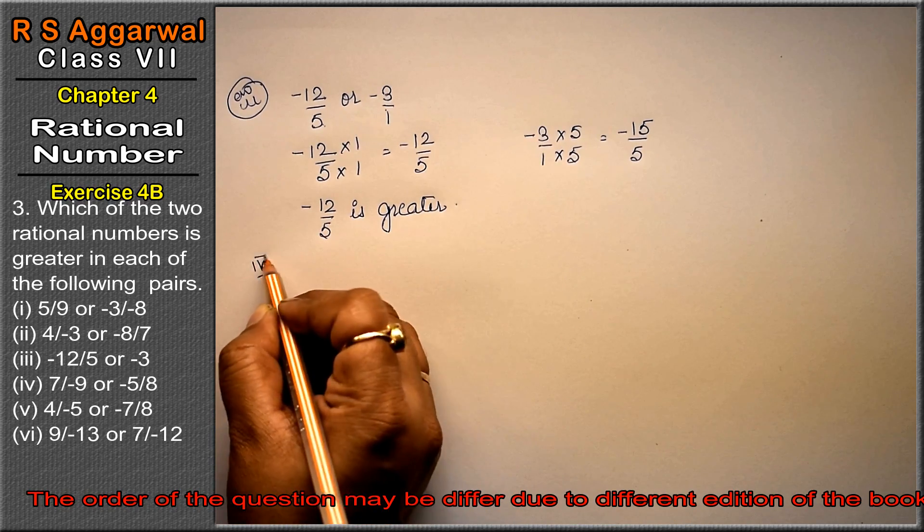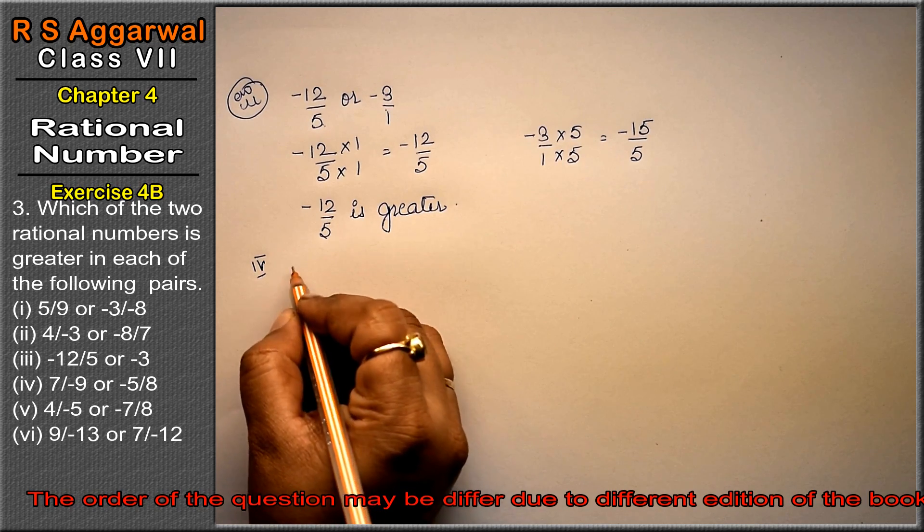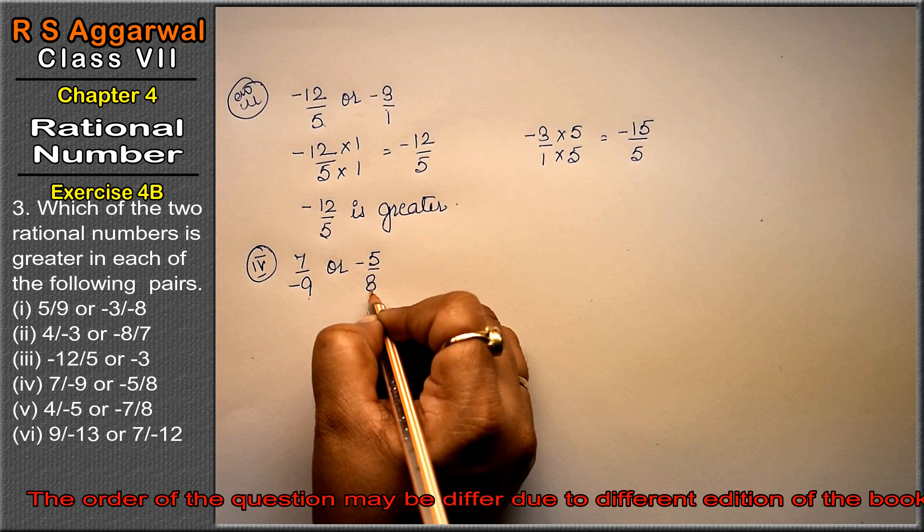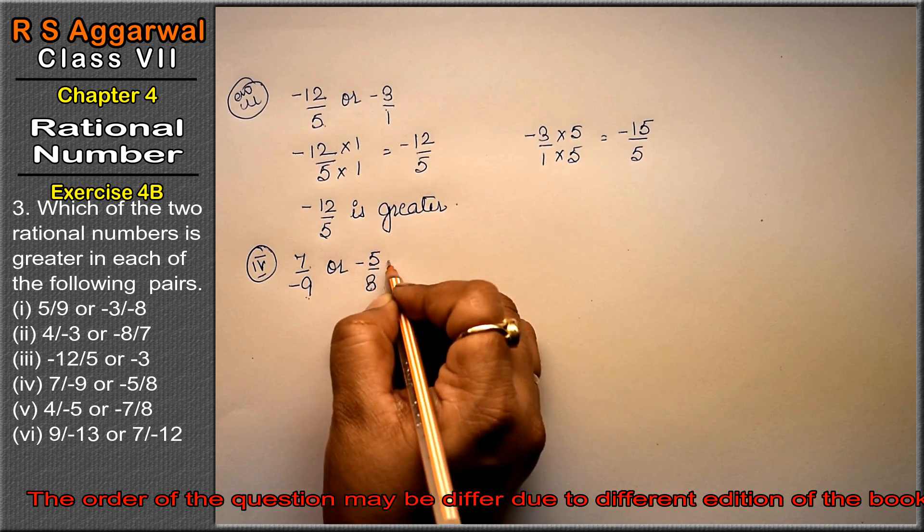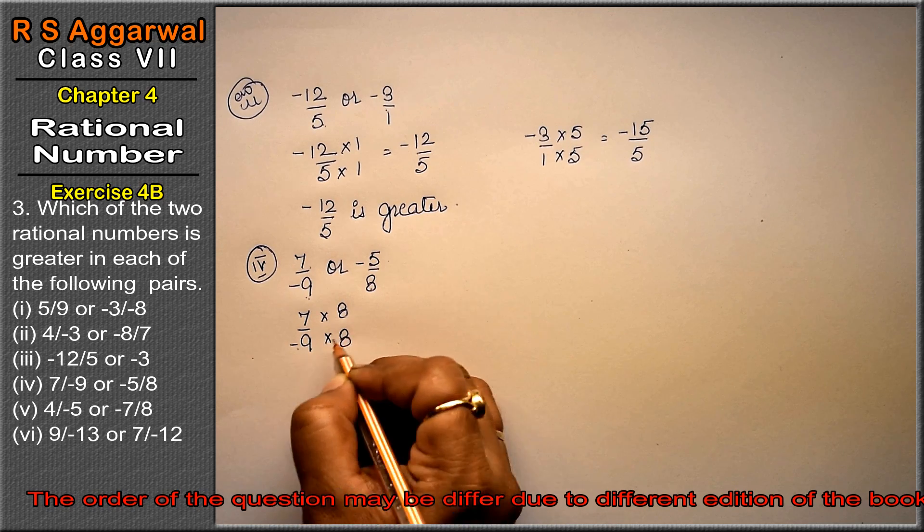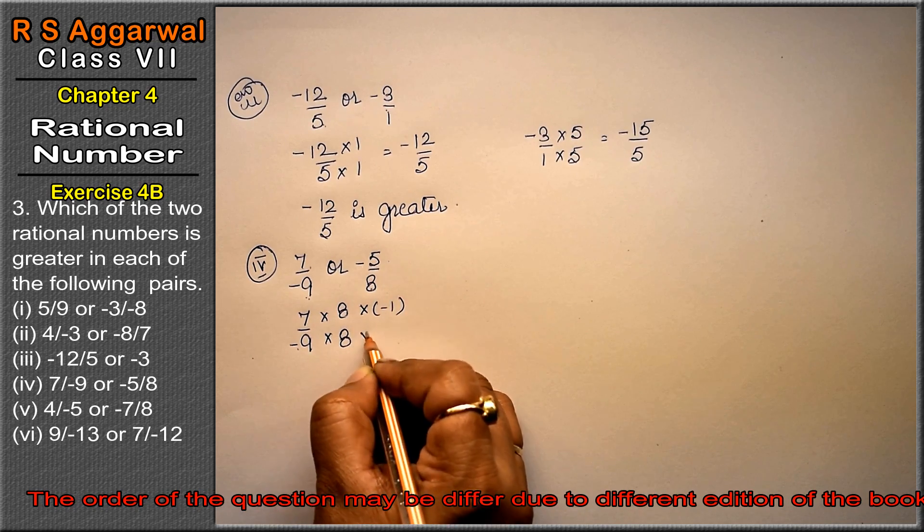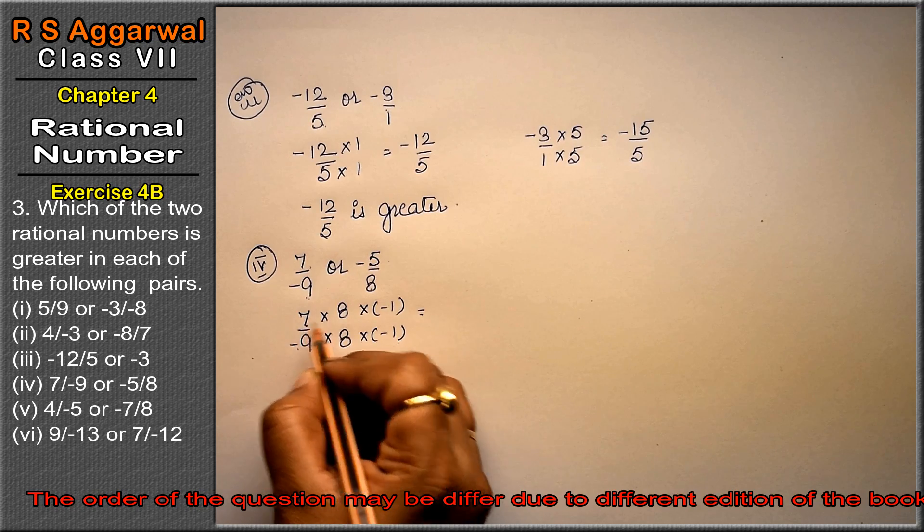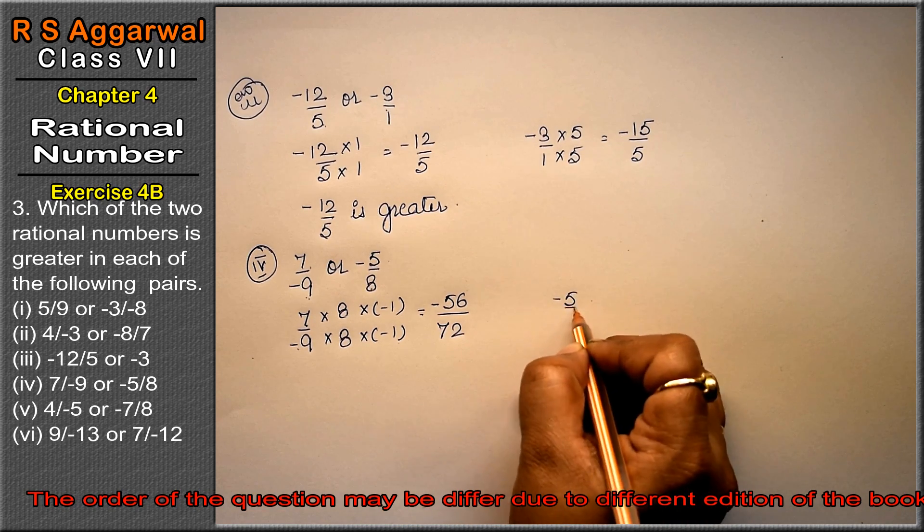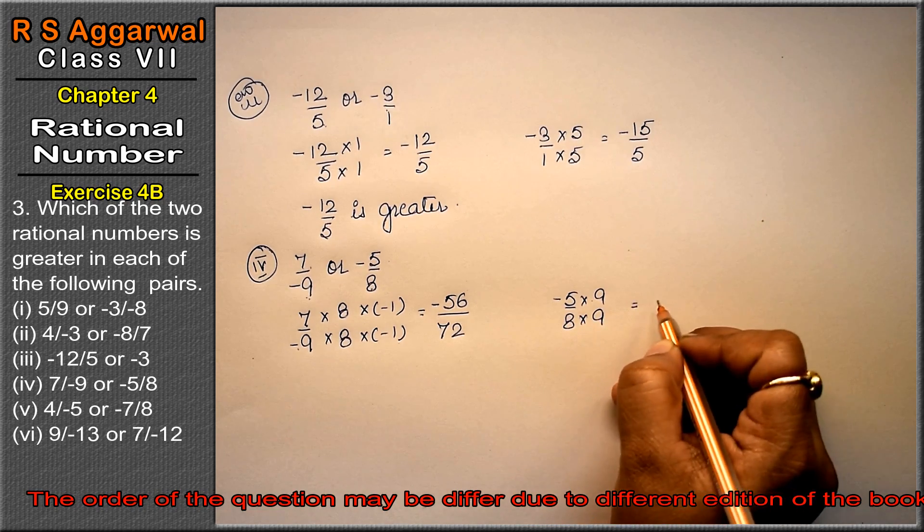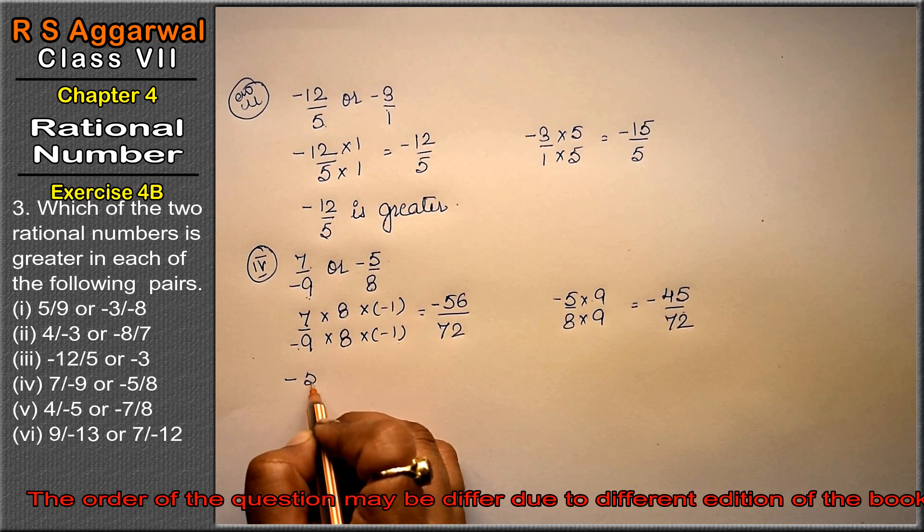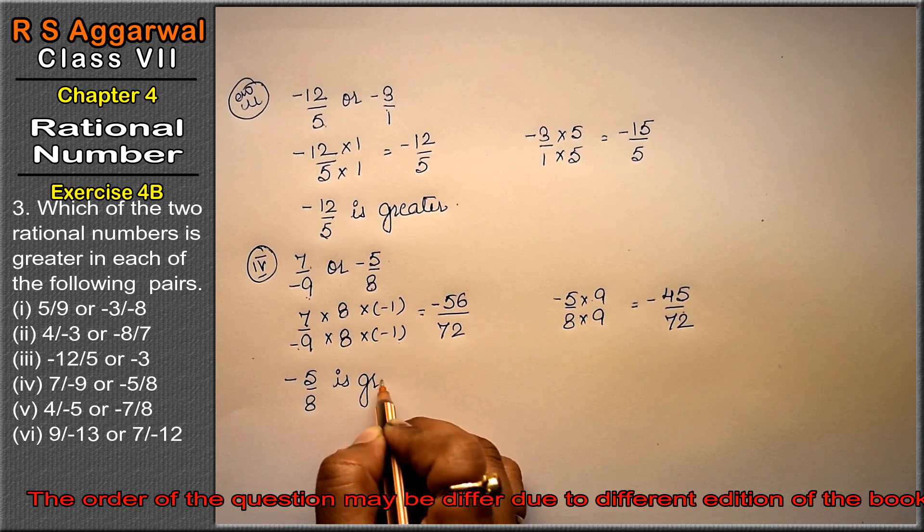Fourth part is 7/-9 or -5/8. Multiply both by the other's denominator. 7 times 8 is 56, so we get -56/72. Multiply -5/8 by 9 to get -45/72. The smaller negative is greater, so -5/8 is greater.